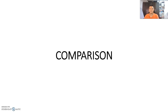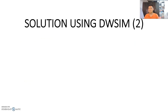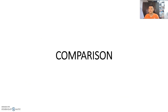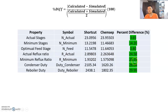The reason I have a comparison slide here is to compare values between the shortcut column and the ChemSep column to see how similar they are. The actual stages in decimal form show a 3.65% difference. The minimum stages show a 14.20% difference. Optimal feed stage: 0.80% difference. Actual reflux ratio: 24% difference. Minimum reflux ratio: 20% difference. Condenser duty: 26.04% difference. Reboiler duty: 29.99% difference.